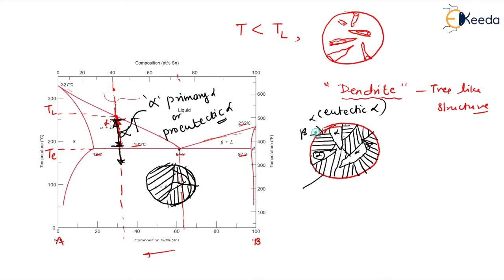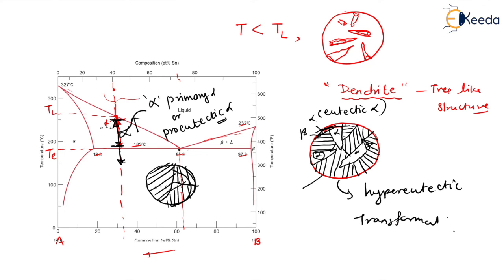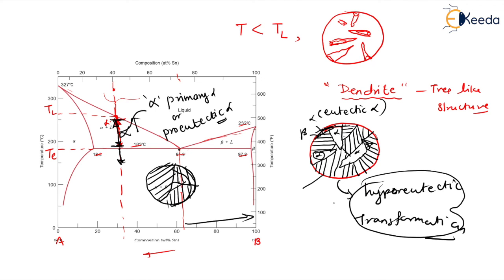This is the microstructure you can see — this is the evolved microstructure in the case of the hypoeutectic transformation. Less than eutectic composition is hypo, and more than eutectic is hyper. So the transformation we discussed was the hypoeutectic transformation. Thank you so much.